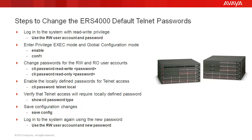We'll go through these steps to change the ERS 4000 default telnet passwords. First, we log into the system with the rewrite privilege using the rw user account and password. Then we enter the privilege exec mode with 'enable', then configuration mode with 'conf t'. Then we change the password for the rw user account using the command 'cli password rewrite password'. Then we do the same thing for the rw-only user account using the similar command 'cli password rewrite only password'.